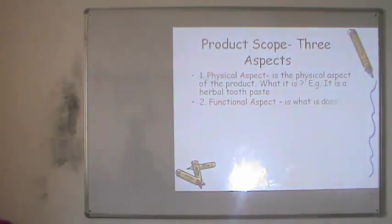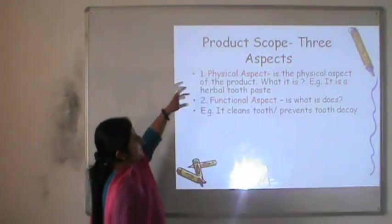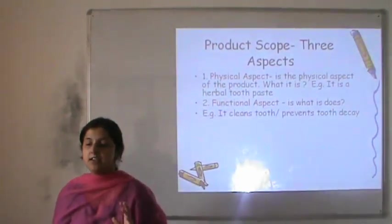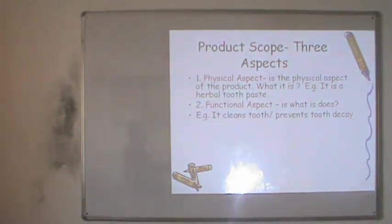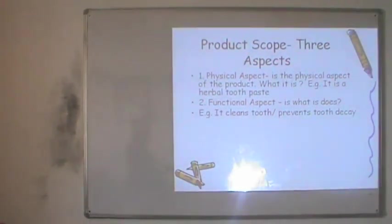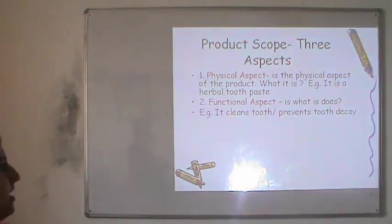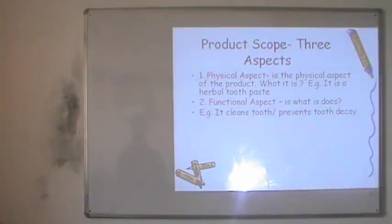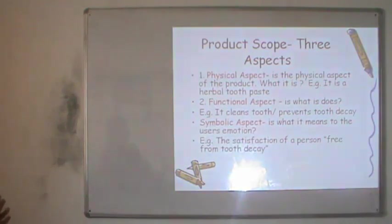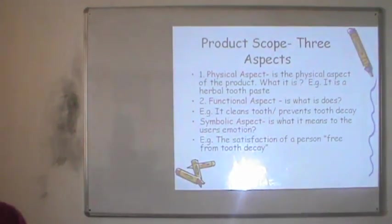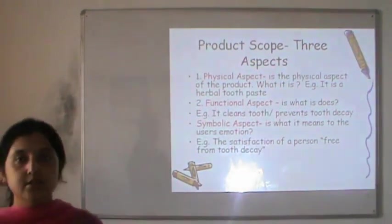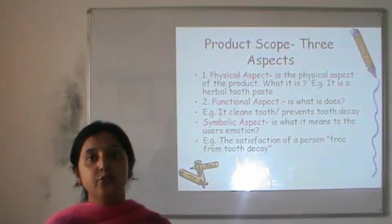A product essentially consists of three parts. The first is the physical or core part — the basic reason anyone would buy the product. For example, in the case of toothpaste, the basic reason is that it should have teeth-cleaning properties. The second is the functional aspect, which specifies what it does and how it differs from others — for instance, whether it prevents tooth decay or fights bad odor. The third level is the symbolic aspect — how the product relates to the emotions of the consumer.